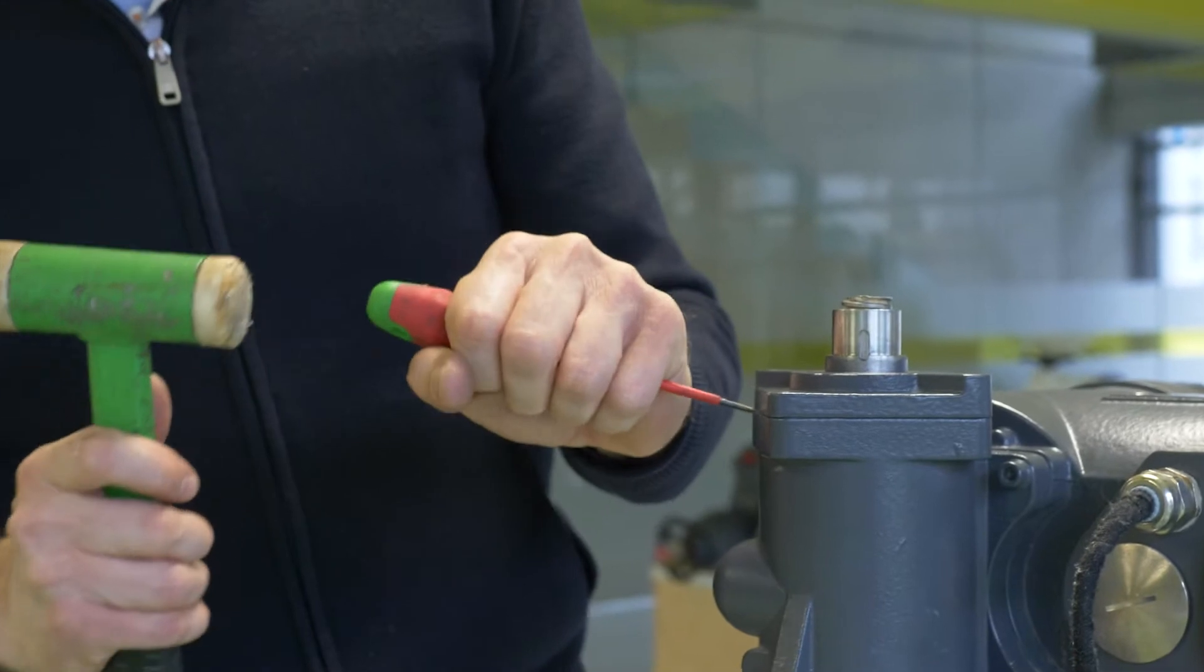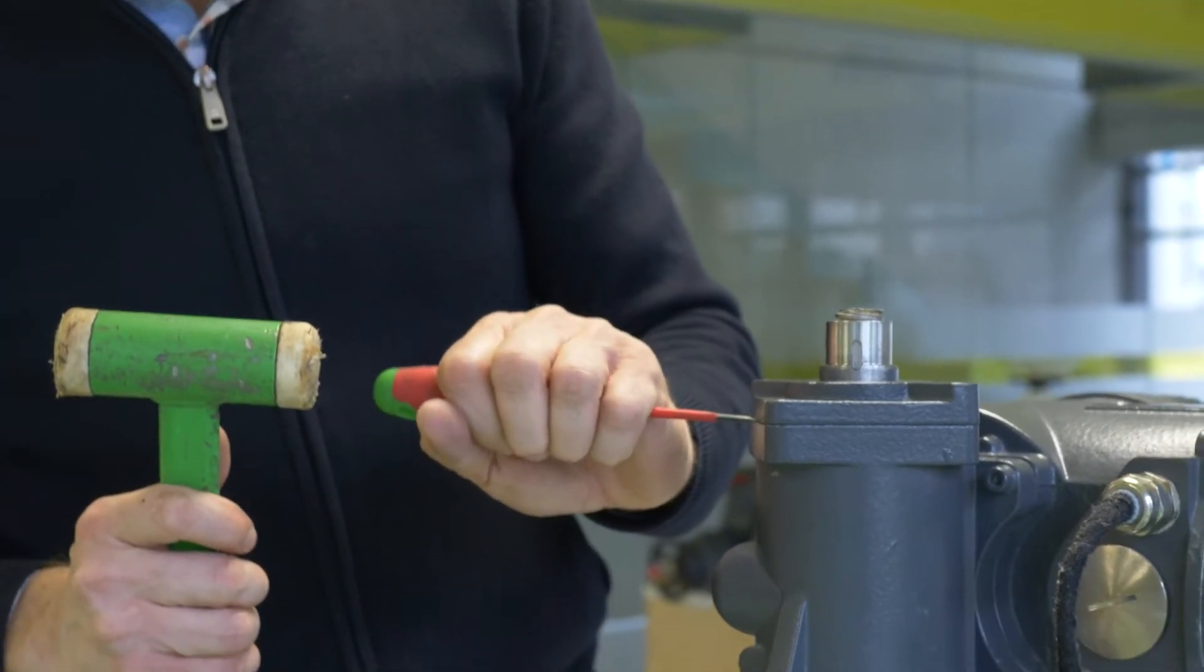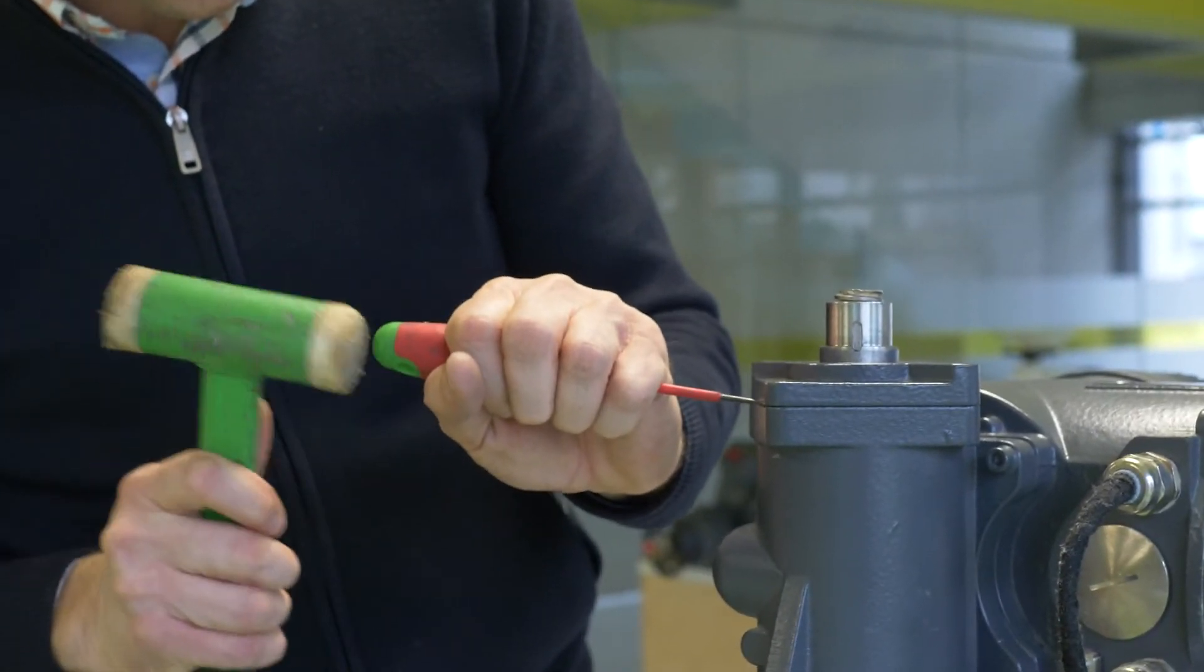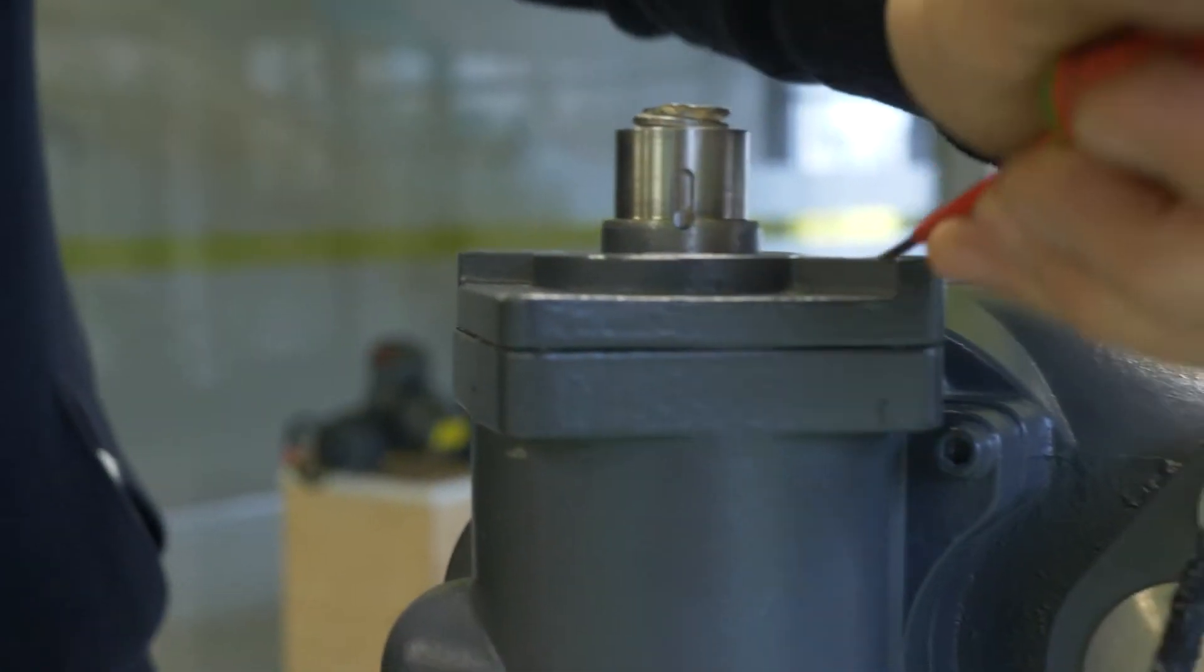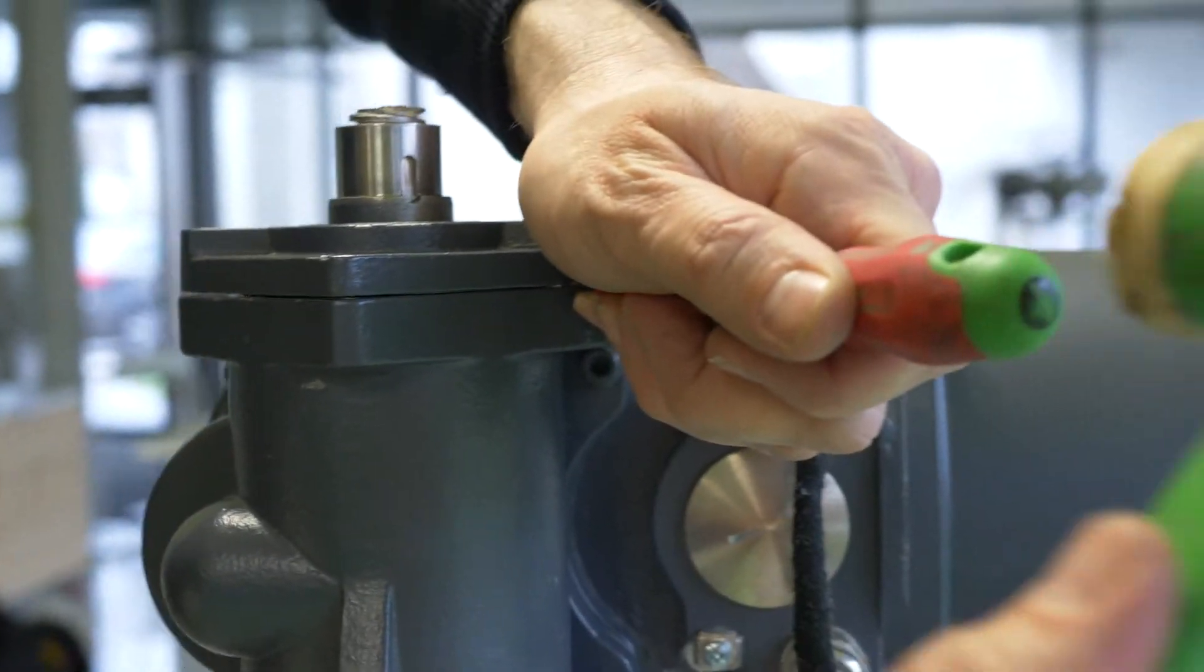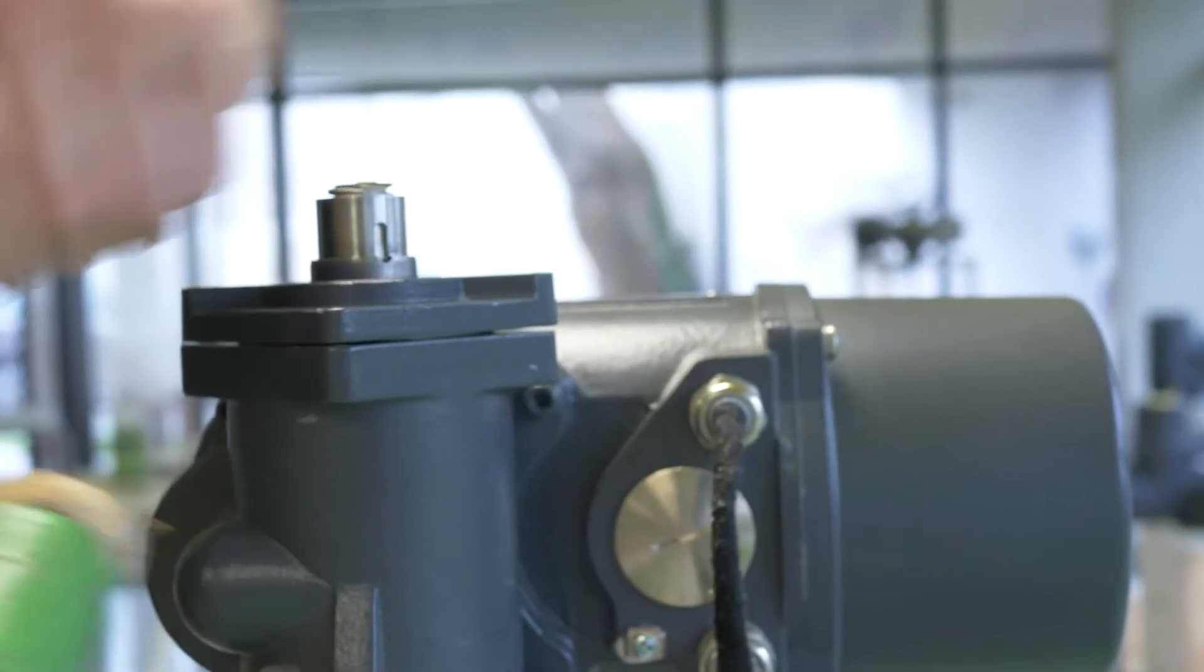Okay, now I take a small screwdriver and a hammer and try to get away this flange from the actuator.